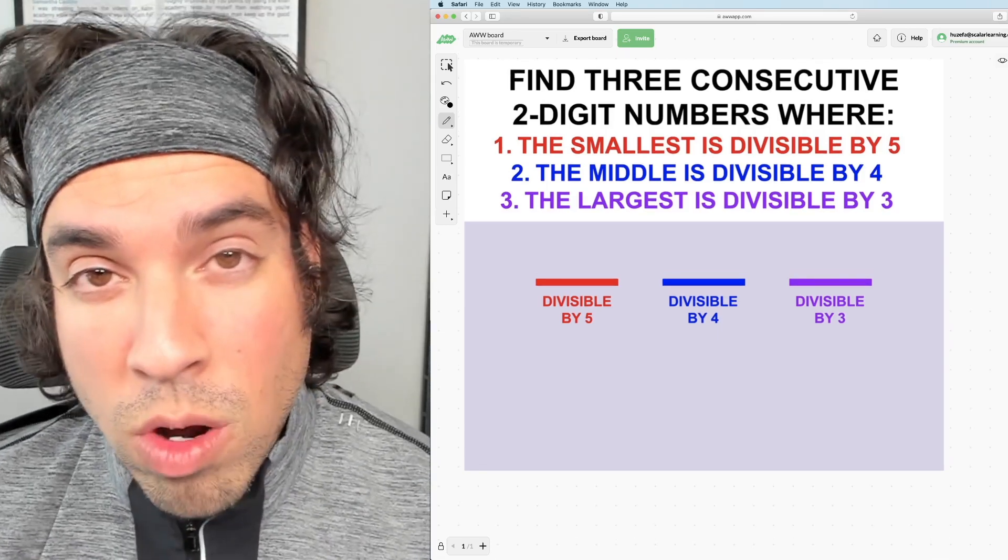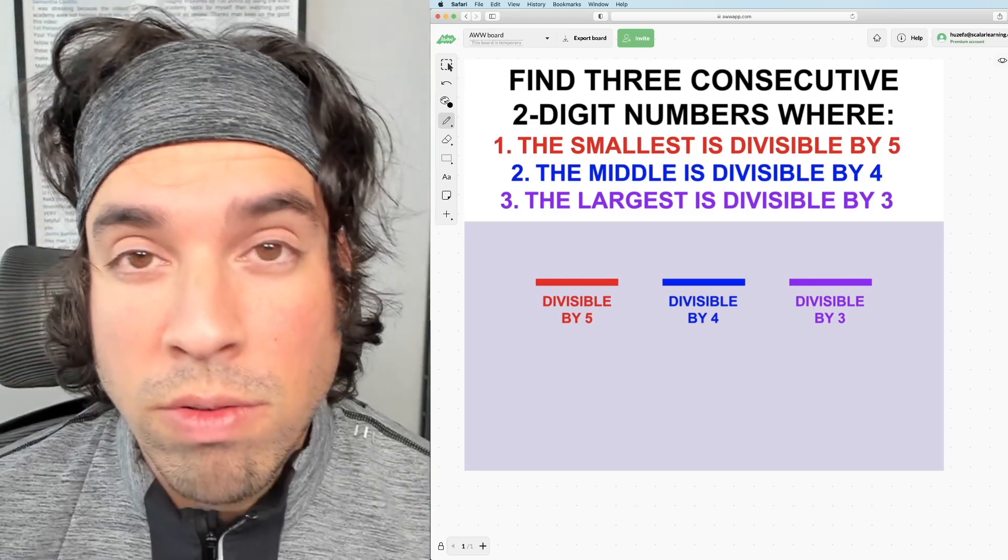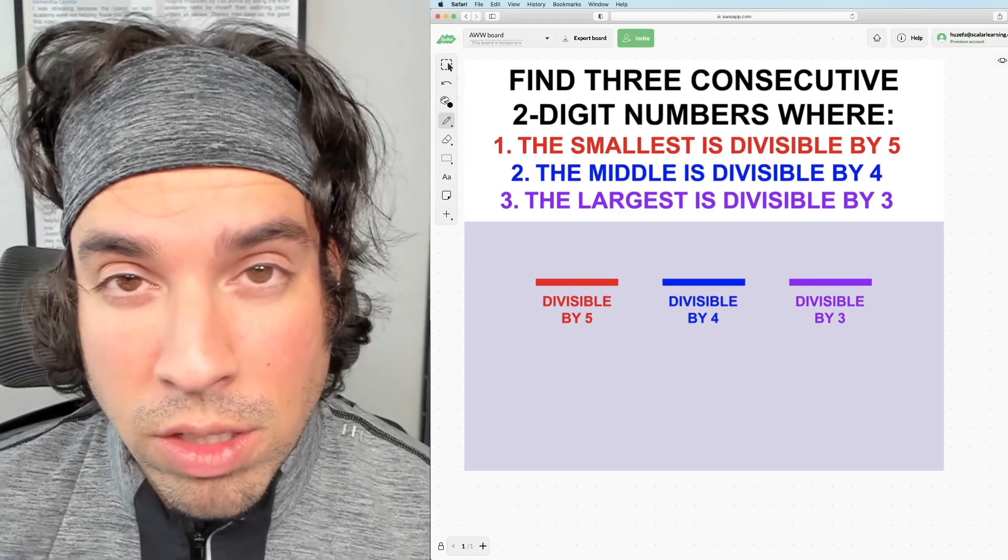And remember consecutive means in a row like five, six, seven, ten, eleven, twelve, twenty-five, twenty-six, twenty-seven, so on and so forth.